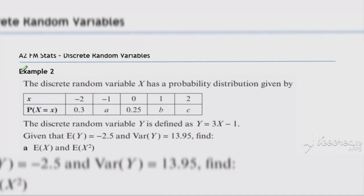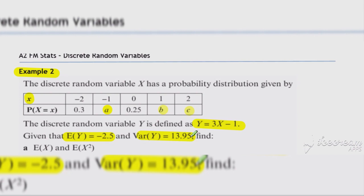A similar idea in example two. Here we've got the probability distribution for x with unknown values a, b, and c. The information we've been given includes: the expectation of y, where y is 3x minus 1, is equal to minus 2.5, and the variance of y is equal to 13.95.